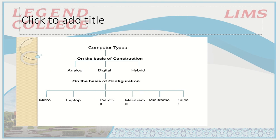Then in digital computers, further on the basis of configuration, different parts can be arranged, and we have these six types: microcomputers, laptop, palm-top, mainframe, mini-frame, and supercomputers.